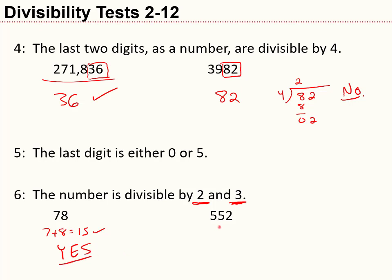How about 552? Is it divisible by 2? Yes, it's even. Is it divisible by 3? 5 plus 5 plus 2 equals 12, and 12 is divisible by 3. So 552 is divisible by both 2 and 3, and therefore it is divisible by 6.